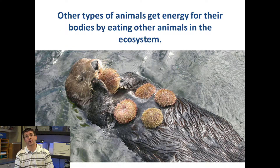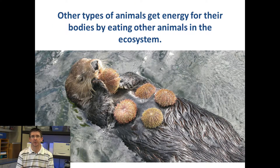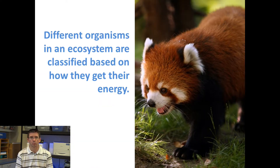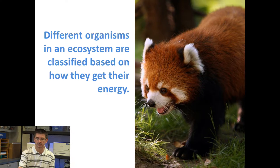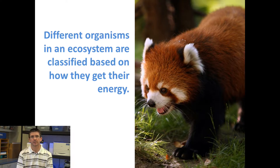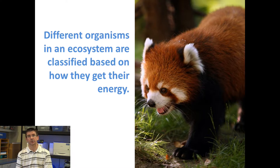Other types of animals don't eat plants — they actually get their energy from eating other animals in the ecosystem. So we have these different types of organisms that eat different things, and we're able to classify them based on what they eat or how they get their food.